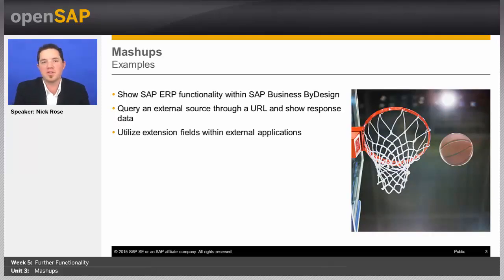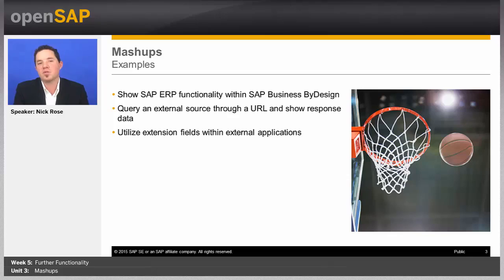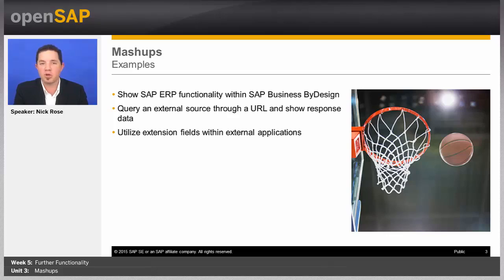Here are some examples of common use cases for mashups. One that comes up a lot is utilizing different screens from SAP ERP within SAP Business ByDesign. Someone may have a web-enabled screen for a certain transaction or application they want to display, and they could bring that in and embed it within SAP Business ByDesign. That way it's part of the process from within their cloud solution while still being able to work with data in ERP easily. You may also want to query an external source to pull data back using a URL mashup or even a web service mashup, and show that response within the application.